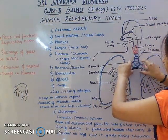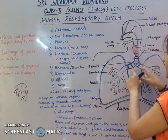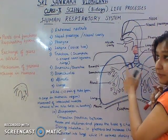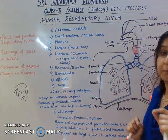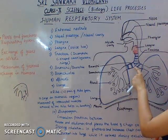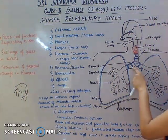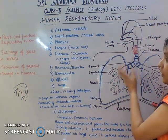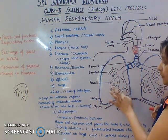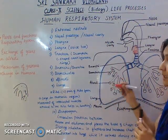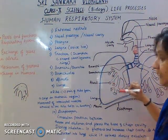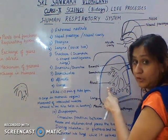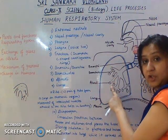Next, the trachea branches into two parts called bronchi — this branching is called bifurcation. Bronchi is the plural term; one branch is called a bronchus. Each bronchus is further divided into smaller branches called bronchioles. The bronchioles end in balloon-like structures called alveoli, which are responsible for the exchange of gases.